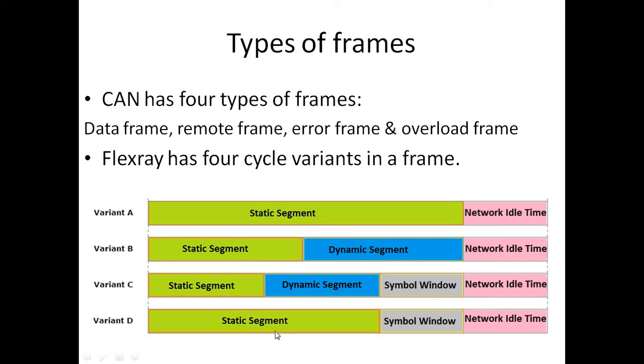In the last variant, where you can see the static segment, symbol window, and network idle time. So the static segment and network idle time, they are mandatory. Whereas dynamic segment and symbol window, they are optional. If any node has any message to be sent, it can make use of dynamic segment. If it does not have, then it is optional.